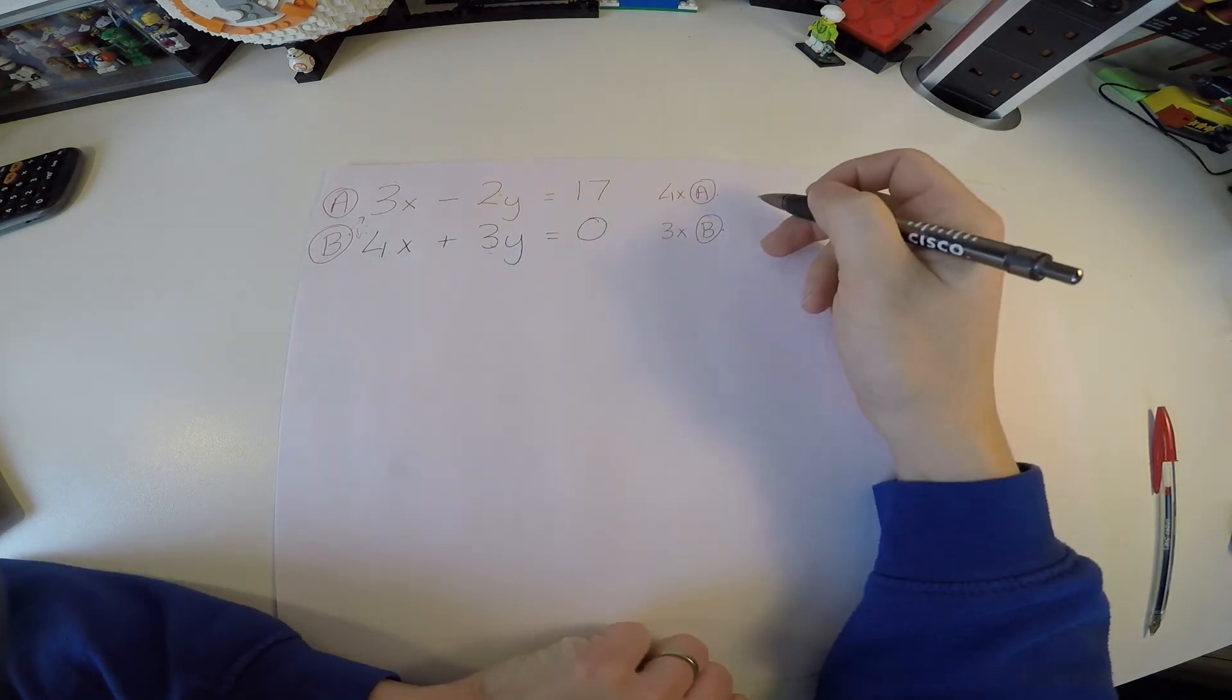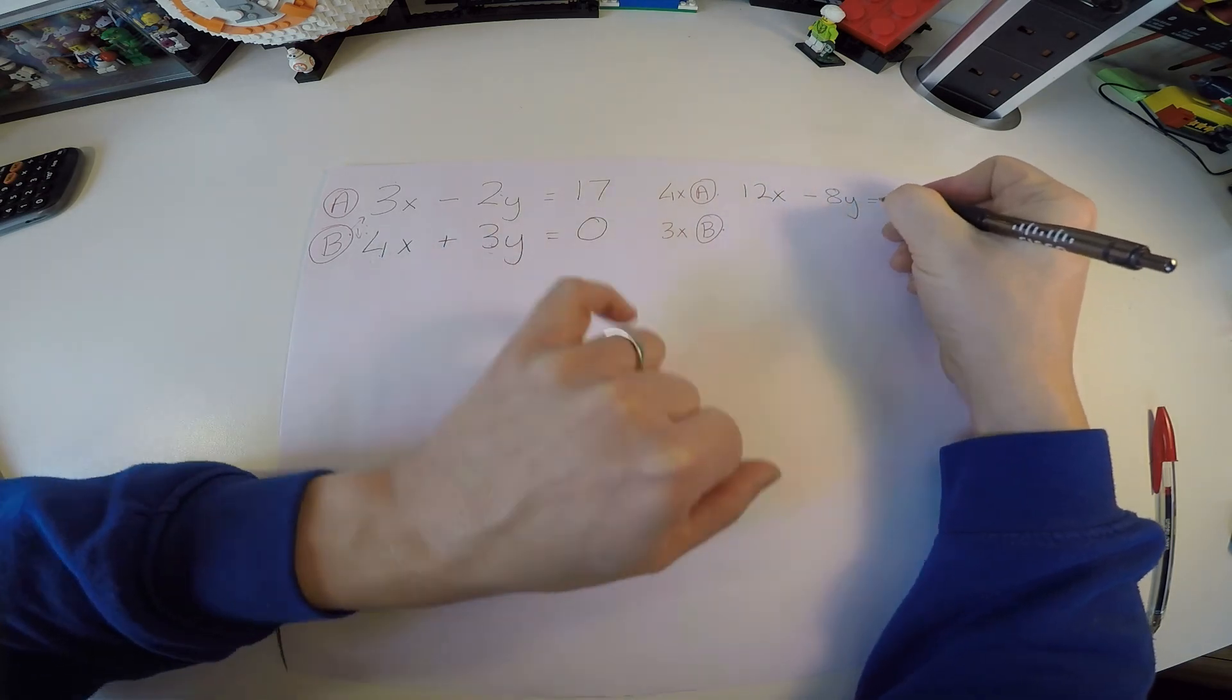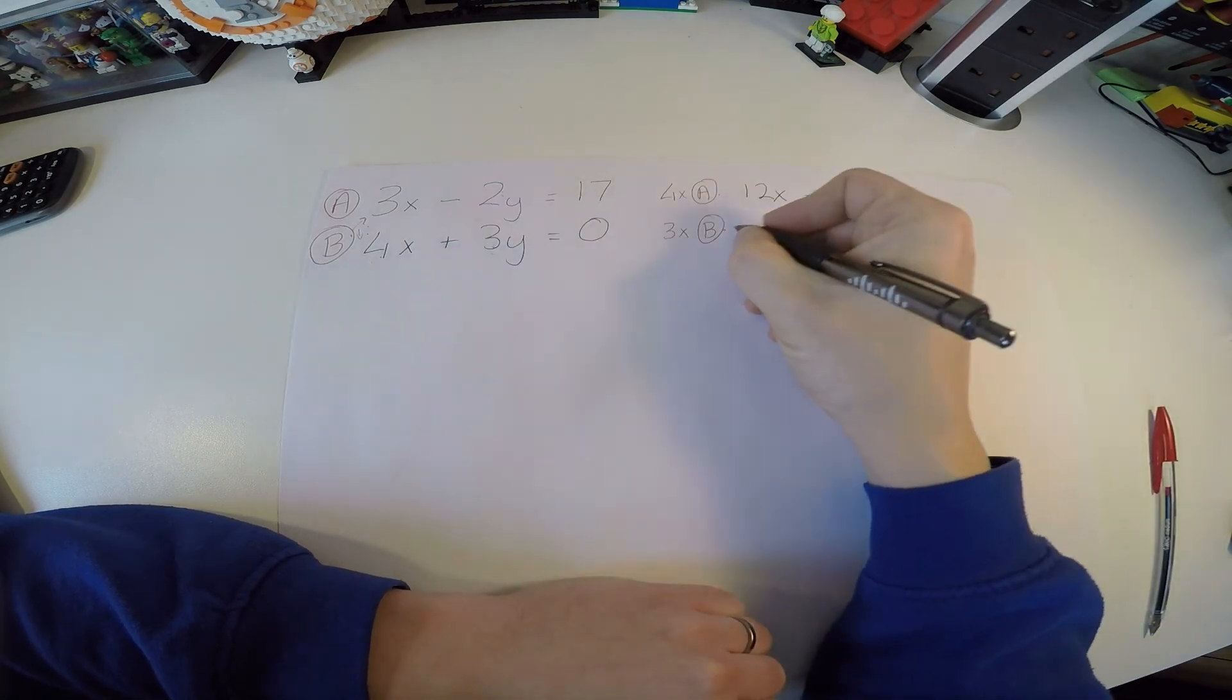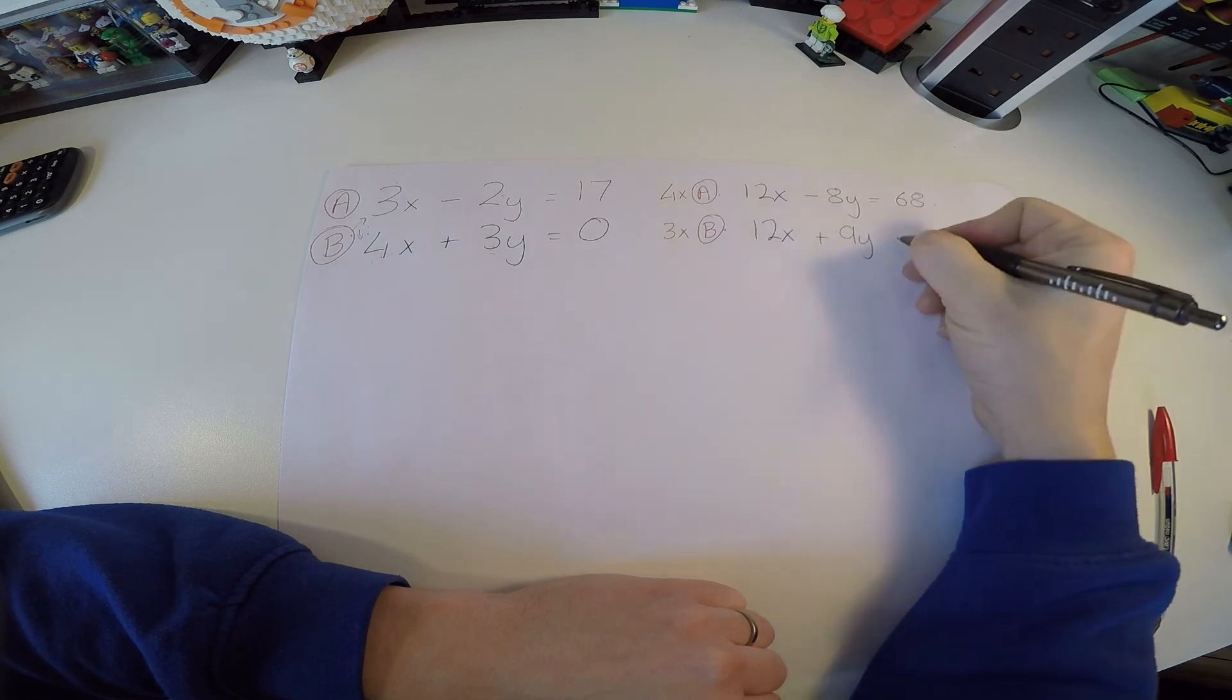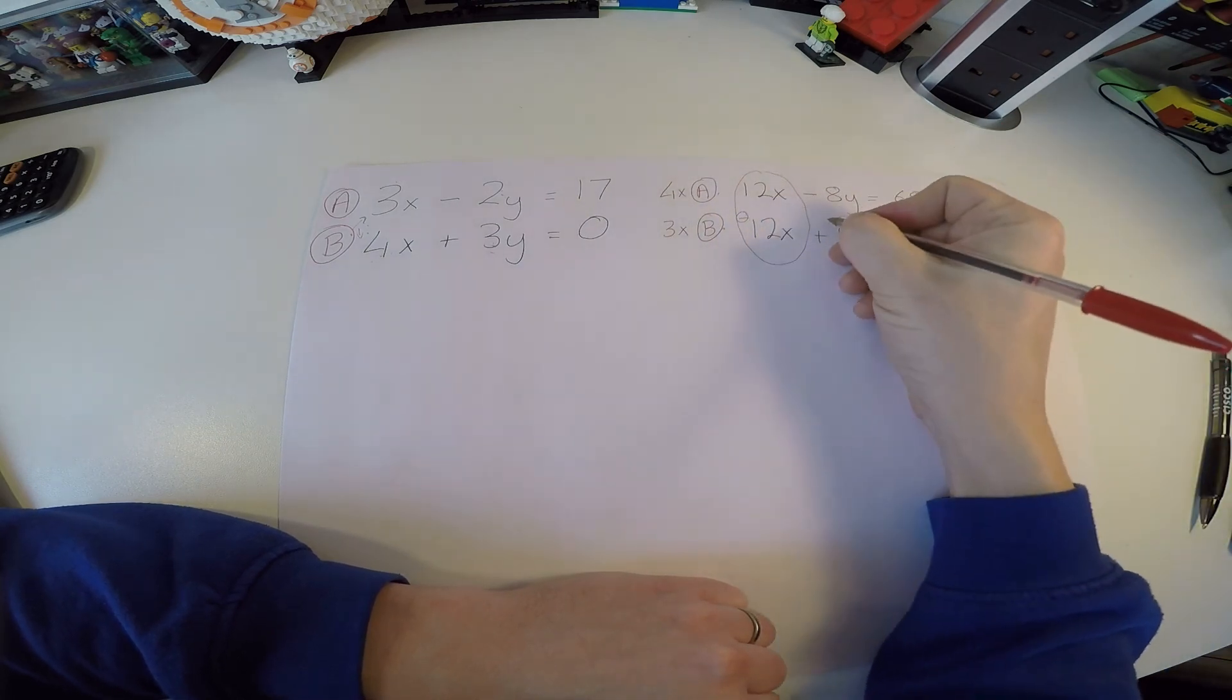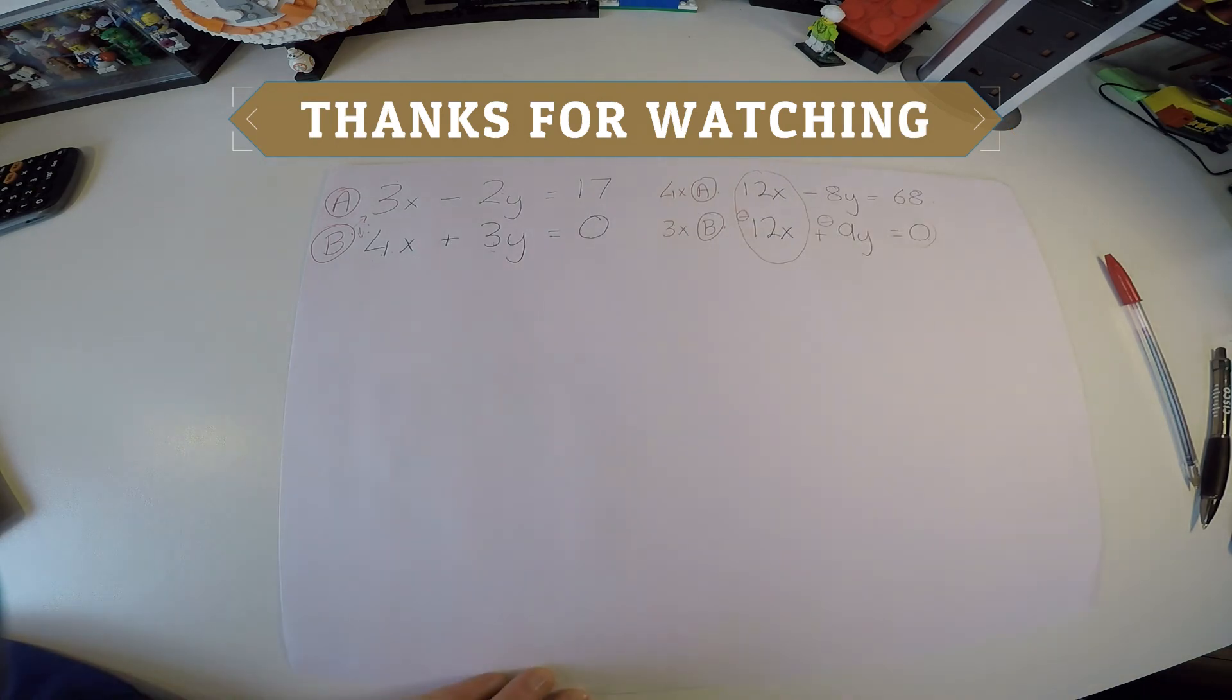4 times a, that gives me 12x. 4 times minus 2, minus 8y. And then 4 times 17, so 40 and 28, 68. Now 3 times b. 3 times 4 is 12x. 3 times 3 is 9y. And 3 times 0 is just 0. Now we now have our matching coefficients. And all you have to do now is change your signs. And nothing to do to 0. And we're off, just like the last problems. I'll put the answer to this down in the description of the video, but I'll leave you to try it out yourself.